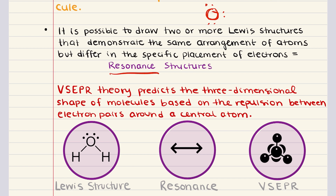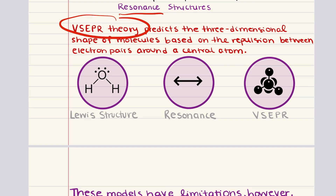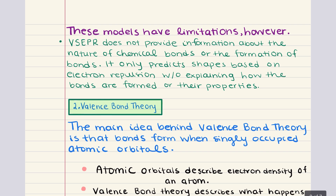To address this limitation, we use VSEPR theory — Valence Shell Electron Pair Repulsion theory — which utilizes Lewis structures to predict the molecular geometry of covalently bonded molecules. According to this theory, the three-dimensional arrangement of atoms around a central atom is determined by repulsions between bonding and non-bonding electron pairs. These electron pairs arrange themselves as far apart as possible to minimize repulsive forces, thereby determining the shape of the molecule. The primary limitation of VSEPR theory is that it does not provide information about the nature or formation of chemical bonds.